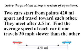Solve the problem using a system of equations. Two cars start from points 420 miles apart and travel toward each other. They meet after 3.5 hours. Find the average speed of each car if one travels 30 miles per hour slower than the other.